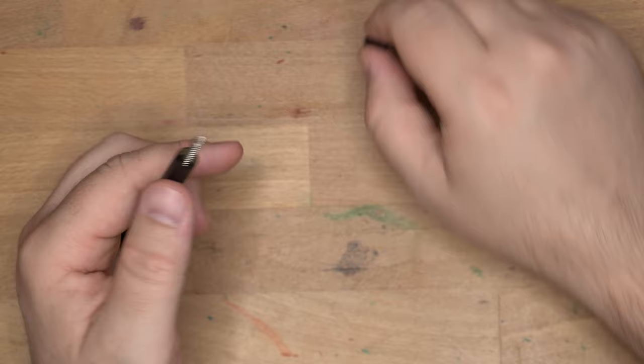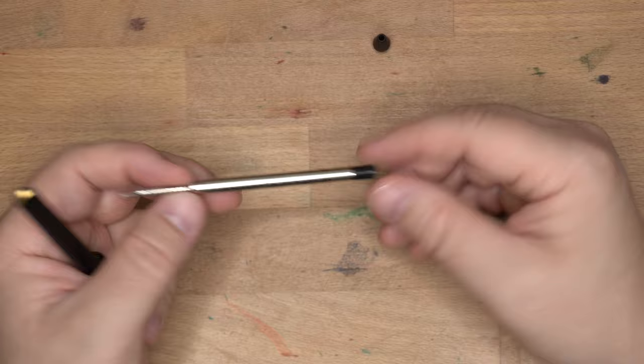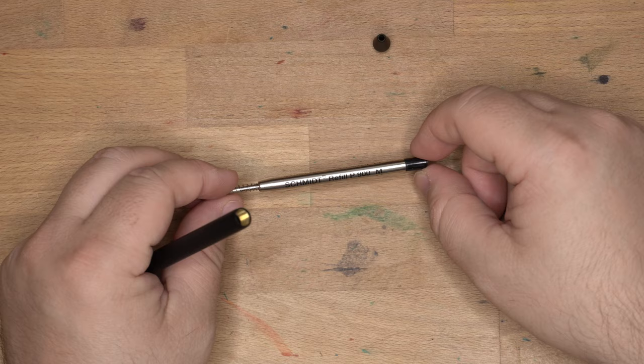Then you take this out. It has a Parker-style refill and they go with the Schmidt P900 medium, which is a perfectly cromulent ballpoint refill, as we'll see here. I'll do a little scribbling with it. I think it's a perfectly good refill. I like it. It's not my favorite, but I do like it. My favorite of course is the Jetstream in this style, but you can switch this out with a bunch of other things because this is a very common size and style.